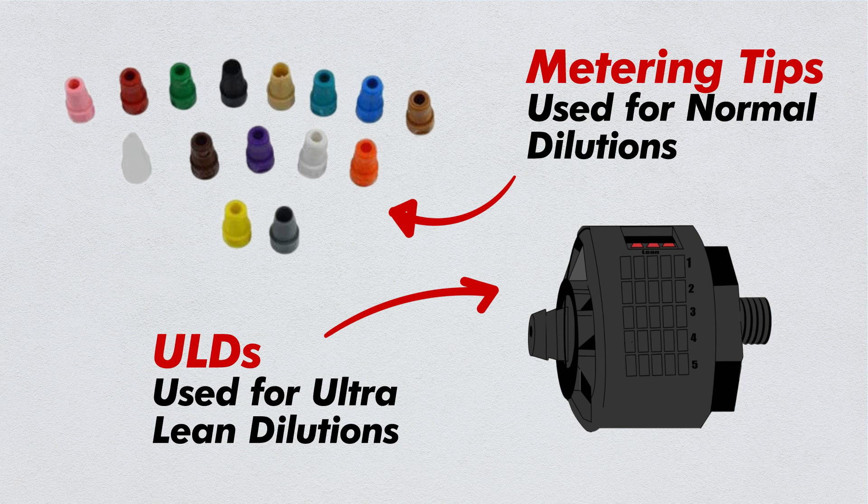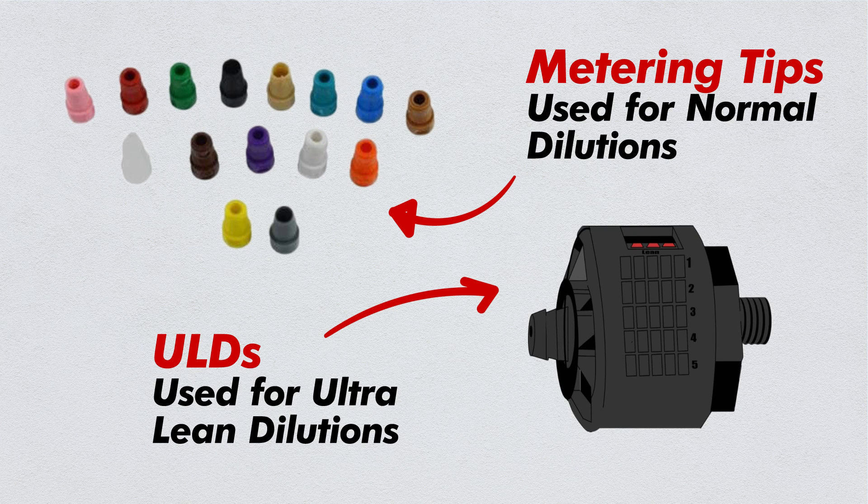Since Ultralean tips are so small, and you're dealing with a hole not much bigger than the head of a pin, a minimal amount of residue can clog a tip in no time.